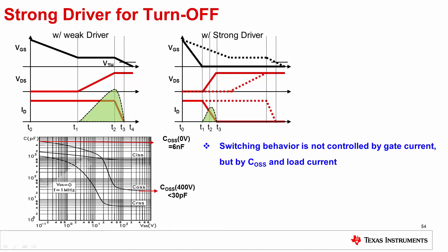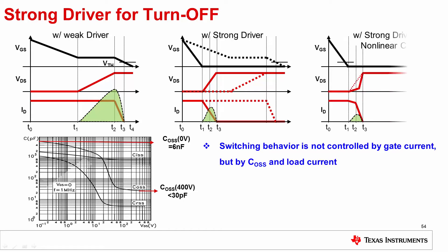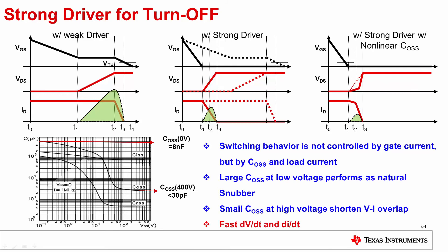Considering the highly nonlinear capacitance, the piecewise linear switching waveform is shown in the upper right. There is very slow dV/dt at the initial stage because the capacitance at low voltage is very large — around 6nF at 0V — followed by very high dV/dt at high voltage, leading to a further minimized overlap area.